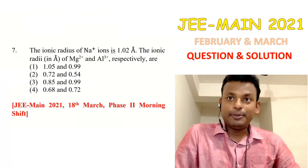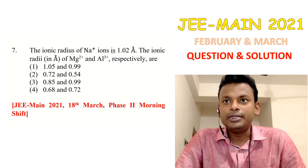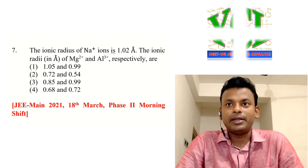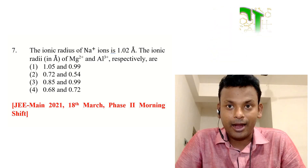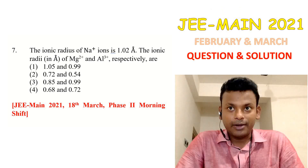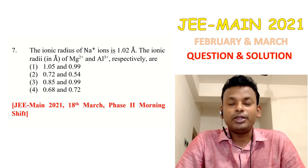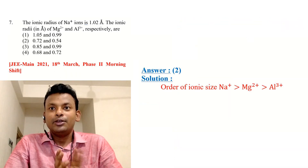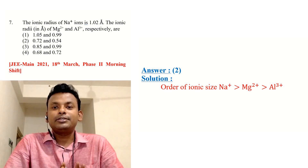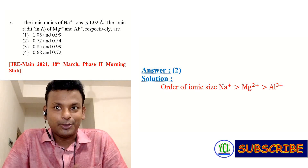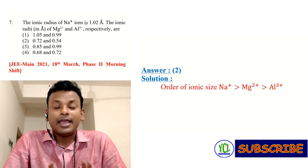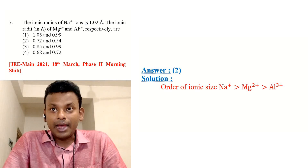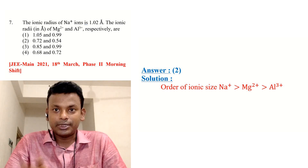Question 7: The ionic radius of Na⁺ is 1.02 Å. The ionic radii of Mg²⁺ and Al³⁺ respectively are — options are given below. This question was set in JEE Main 2021, 18th March, phase 2, morning shift. Answer is option 2: 0.72 Å and 0.54 Å. This is an informative question and the order of ionic size is Na⁺ > Mg²⁺ > Al³⁺.